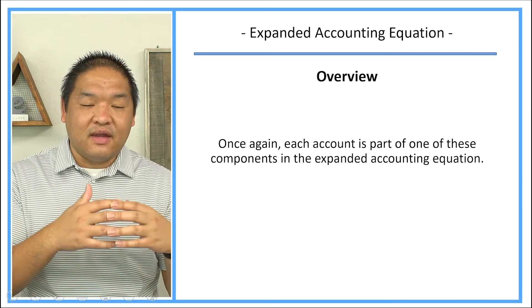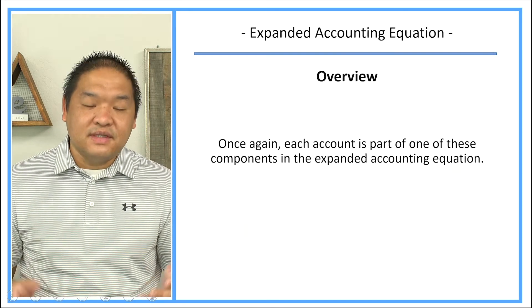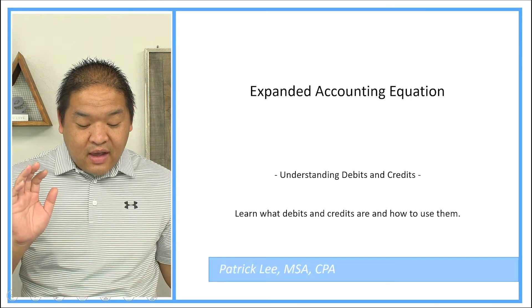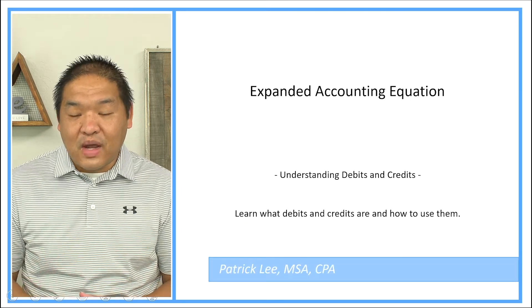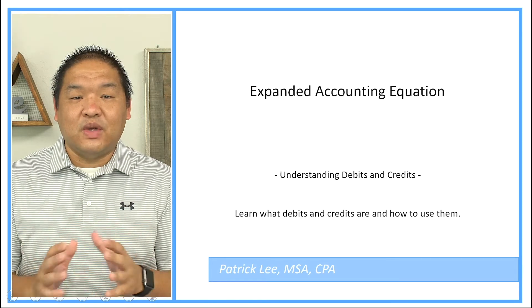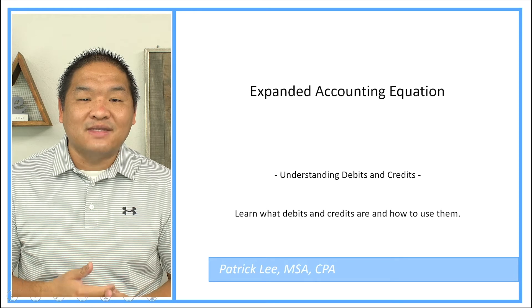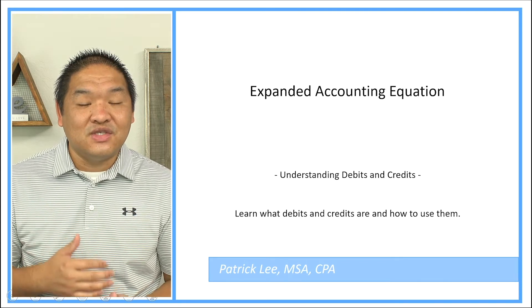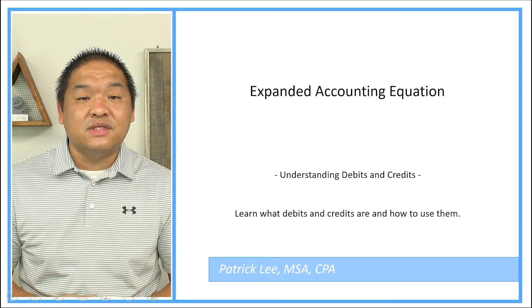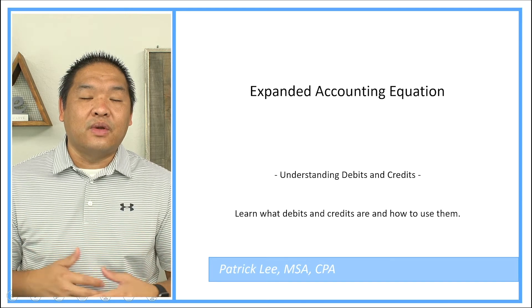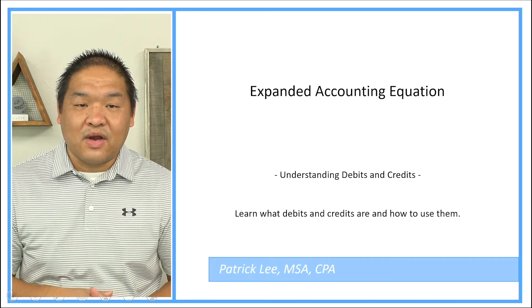So that is the look at the expanded accounting equation. Pretty short, sweet, and to the point. Just remember DEALER: dividends, expenses, assets, liabilities, owner's equity, and revenues. And you're all set for the next lesson where we really explain debits and credits. So until then, we'll see you in the next video.